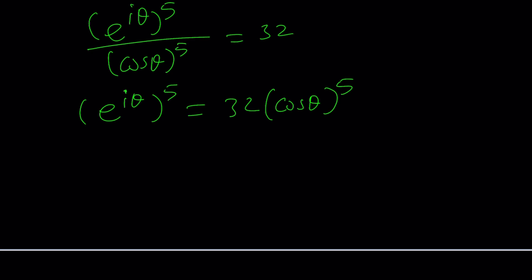How do you take the fifth root, fifth power of E to the i theta? That's going to be E to the power five i theta. And then this expression can be written as follows. I can write it as 32 times cosine theta to the fifth power. But 32 can be written as 32 times E to the power two pi n i, times cosine theta to the fifth power. This would be more appropriate because now when we take the fifth root, it makes more sense.